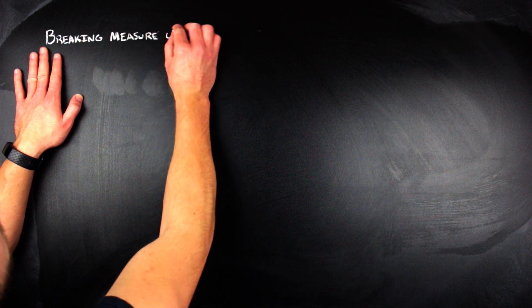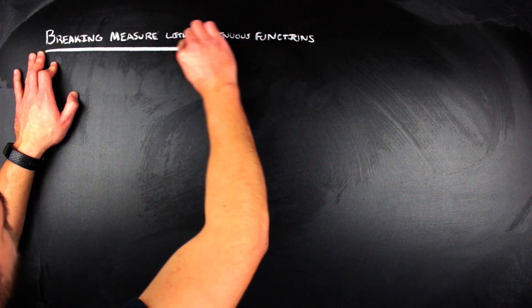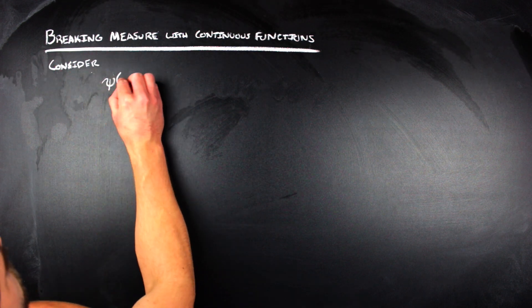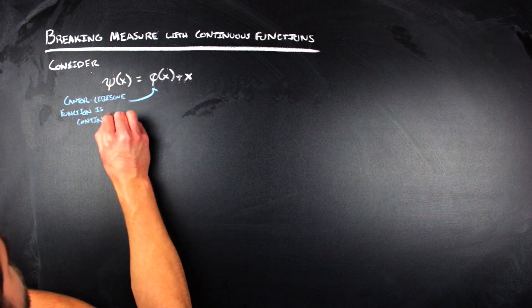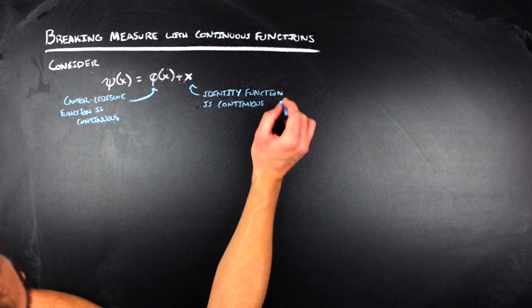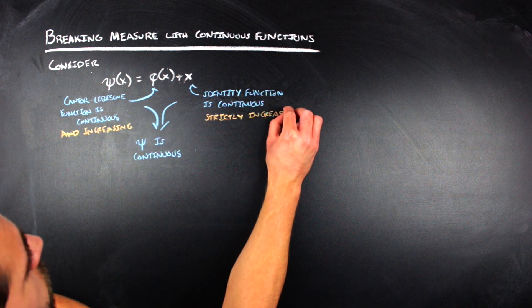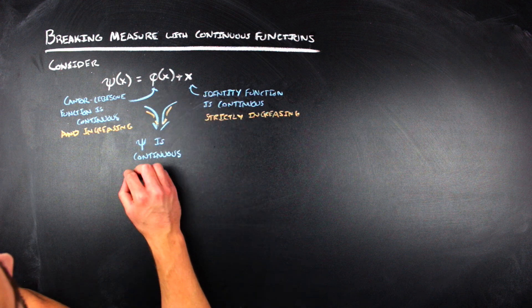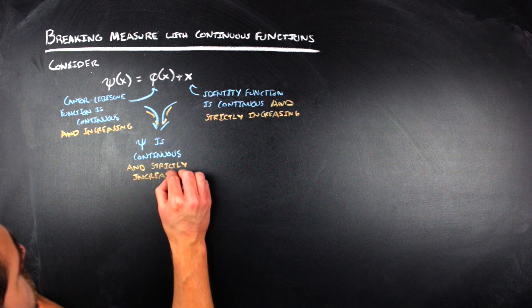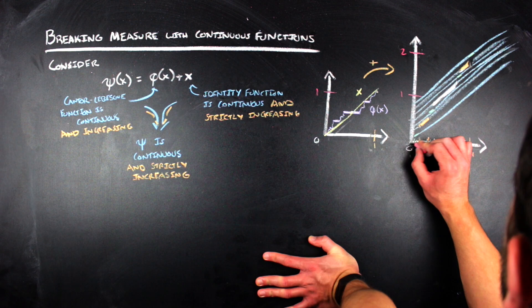The nice thing about continuous and increasing functions is that if you add two of them together, you get a continuous increasing function. So we're going to look at the function phi of x plus x, where phi is the Cantor-Lebesgue function, and we're going to call it psi. Since the Cantor-Lebesgue function and the identity function are both continuous, that means the sum in psi is also a continuous function. Similarly, since the Cantor-Lebesgue function is weakly increasing and the identity function is strictly increasing, then we know that our psi function is strictly increasing as well.